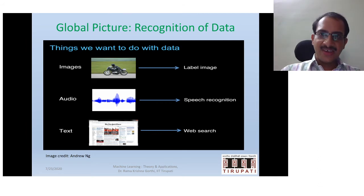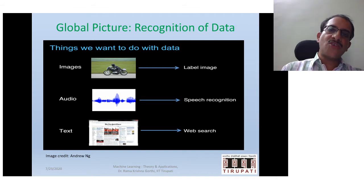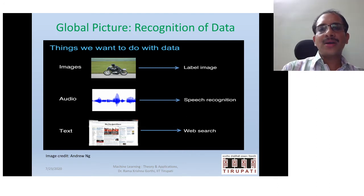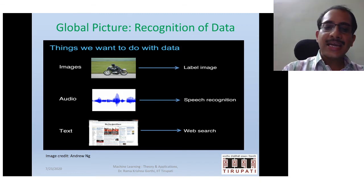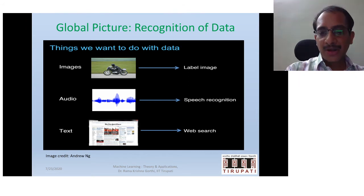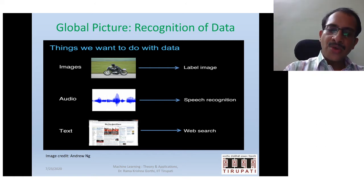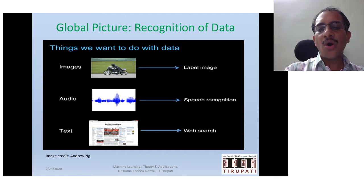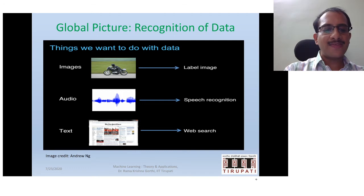This is a slide from Andrew Ng's lectures. It gives a global picture of what pattern recognition is and what recognition should be done across different kinds of data. Recognition is important in images — to identify if it is a bike or a person riding a bike — to understand the voice or speech of a person, or to understand text and identify a particular sentence or word. Almost all real tasks can be categorized into visual, audio, or text, making recognition of prominent importance in many applications.